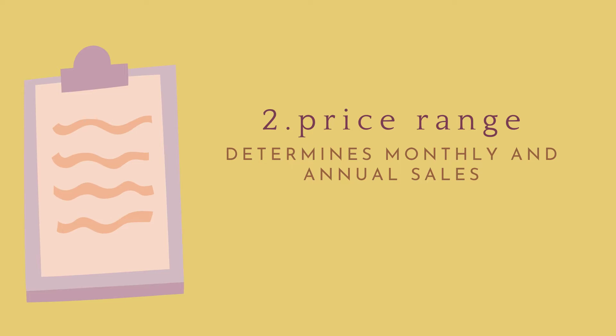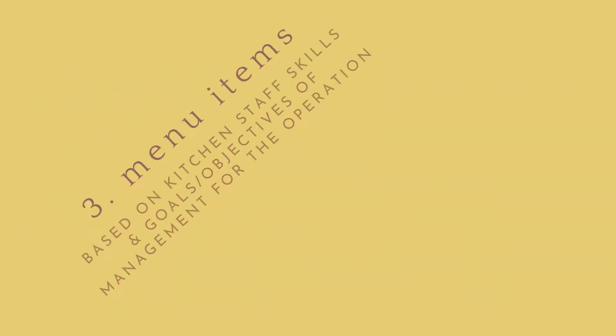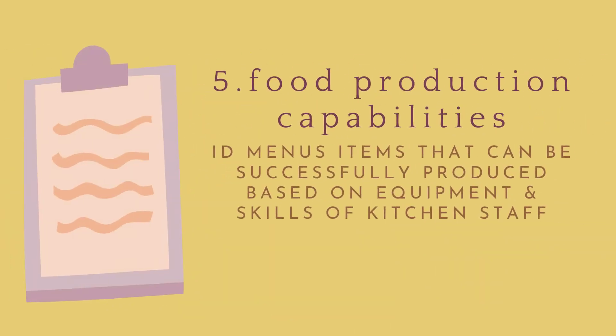The third factor is menu items. Menu items are based on kitchen staff skills and the goals or objectives of management for the operation — balancing volume versus quality, adding volume without compromising quality. The fourth factor is cuisine orientation, which helps determine the pricing structure of the menu program.